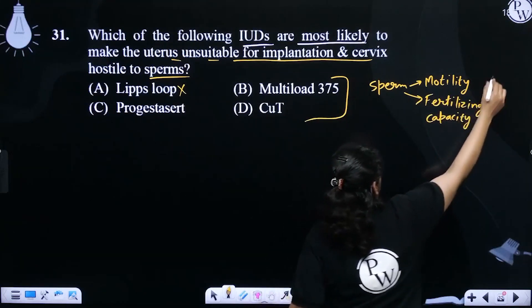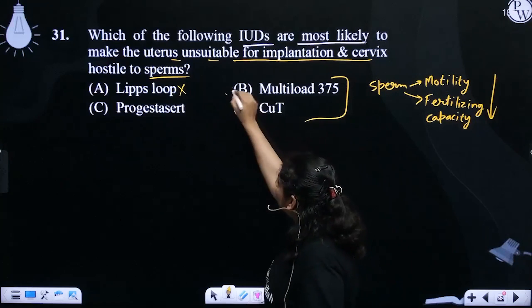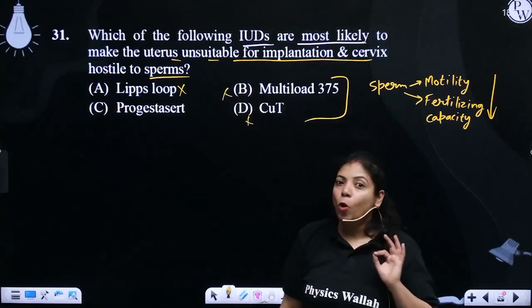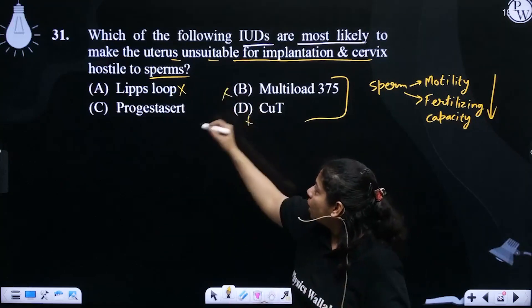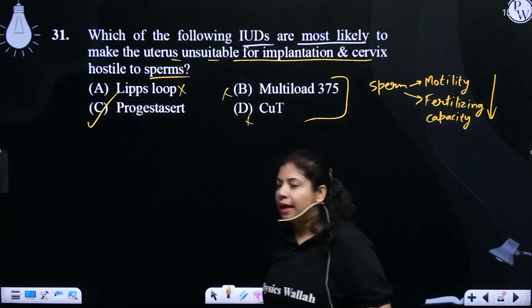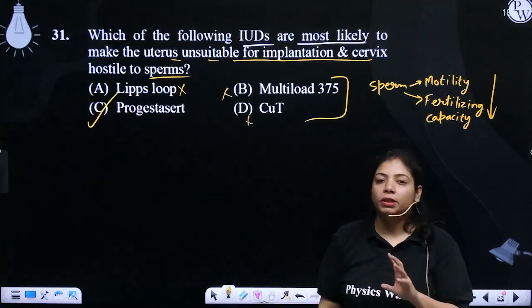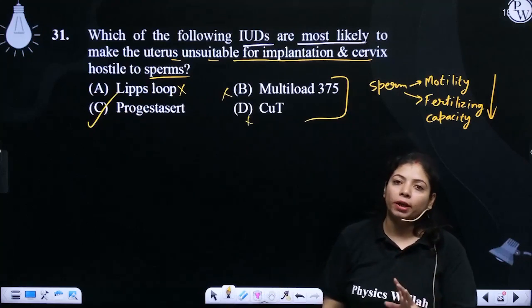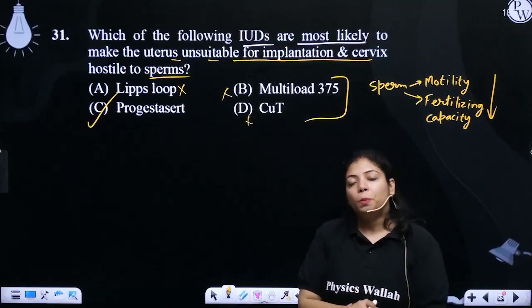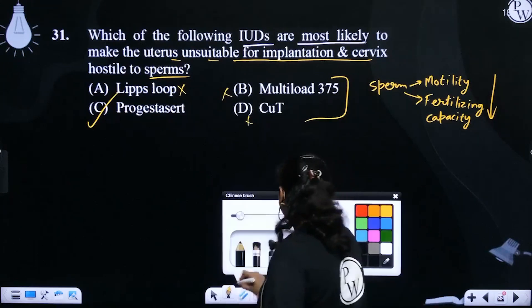It suppresses them. This is not the same as both of those. This is the hormonal IUD, which will make the uterus unsuitable for implantation and alter cervical mucus quality so that the environment will be hostile. The correct answer is option C.